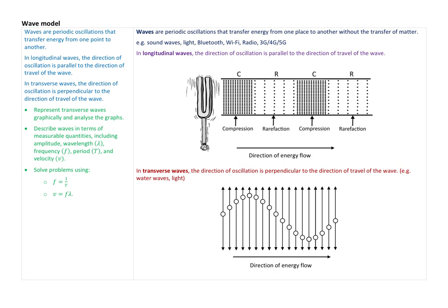To summarize: we can now represent transverse and longitudinal waves graphically and analyze the graphs. We understand wavelength, frequency, period, velocity, and amplitude, and we understand where the two formulas come from. Hopefully you'll be able to answer questions about these and understand what people mean when they use terms like frequency, wavelength, velocity, and amplitude when talking about sound and electromagnetic waves like light.